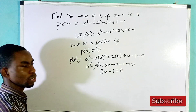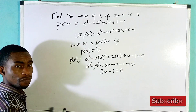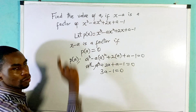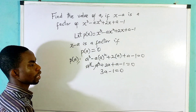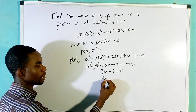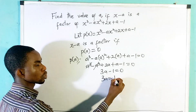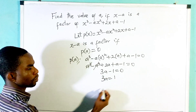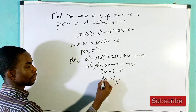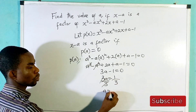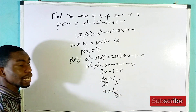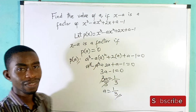The next thing we are doing is to find the value of a — that was the question. If we take 1 to the right-hand side, we have 3a equals 1. Dividing both sides by 3, a equals 1 over 3. That's the value of a.